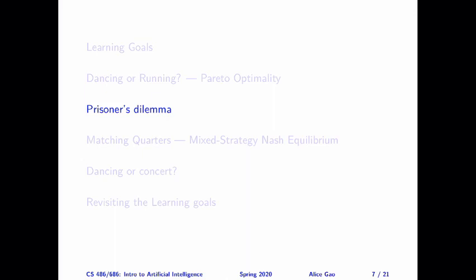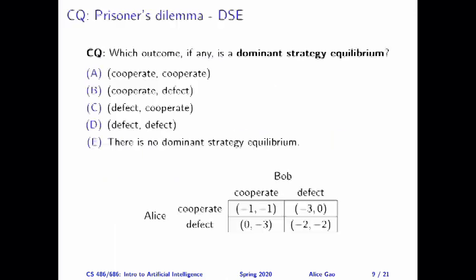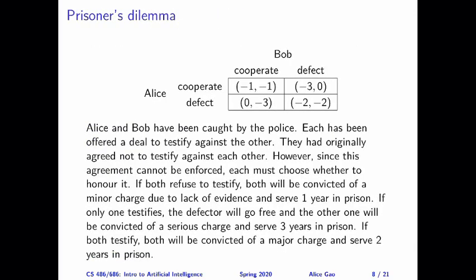There are many versions of this game. In this version, Alice and Bob have been caught by police, and each of them has been given a chance to testify against the other. Originally, they don't want to testify against each other, and if they don't say anything, they end up with a pretty good outcome. But the police decided to separate them and interrogate them separately, so they won't be able to communicate and have to independently make the decision of whether to testify against the other person or not.